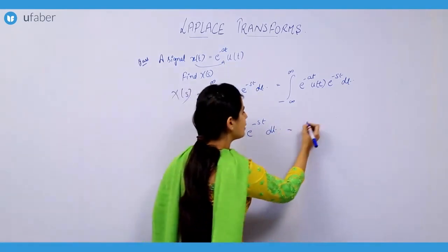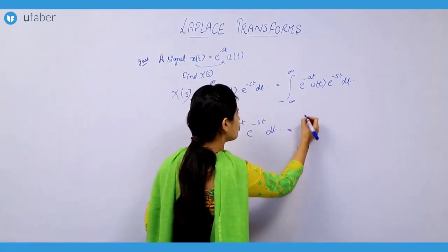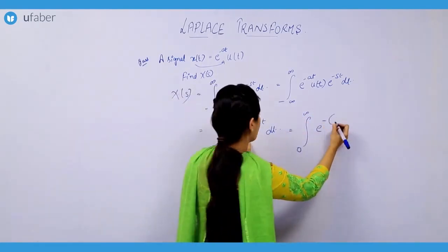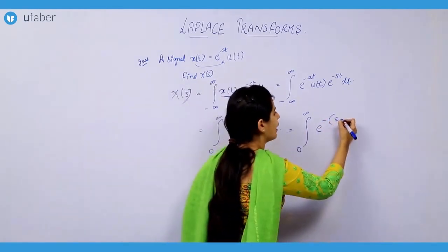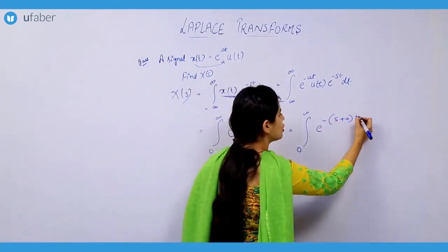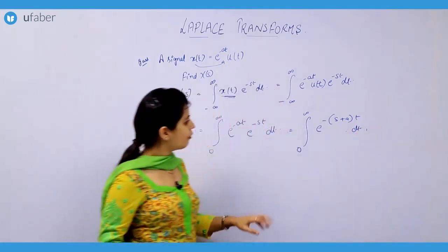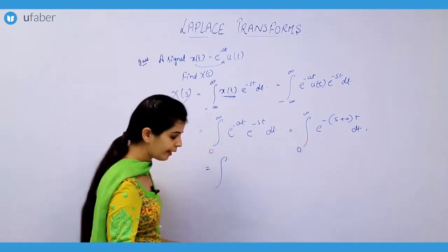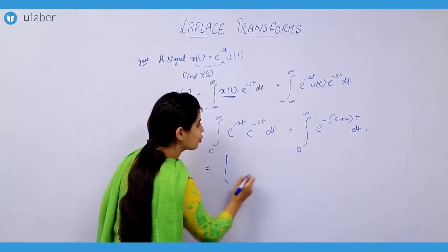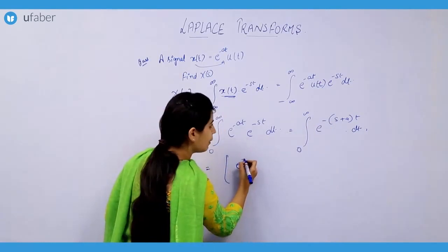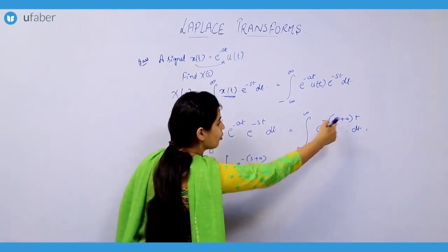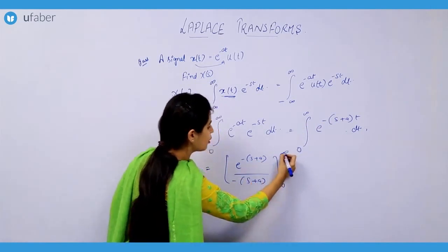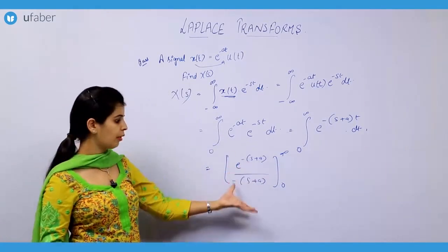Now I can write it as the integral from 0 to infinity of e raised to the power minus of (s plus a) into t dt, combining the exponents. After integration, I get the same function divided by the constant, which is minus of (s plus a), evaluated with limits from 0 to infinity.